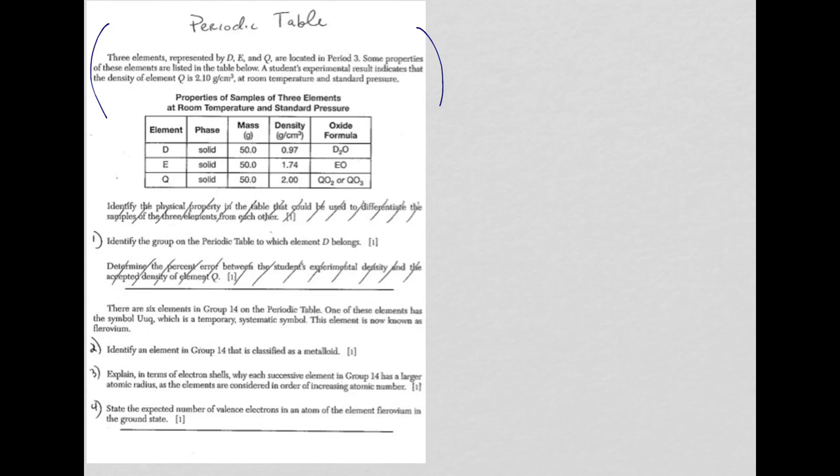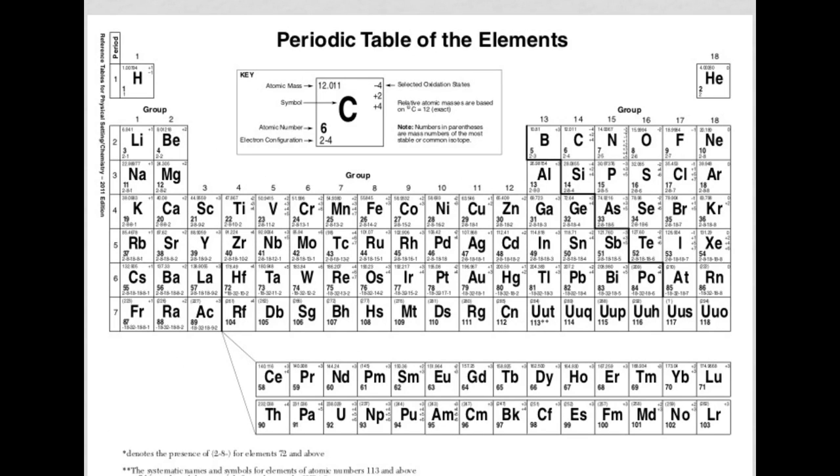For Question 1, we're looking to identify the group on the Periodic Table to which element D belongs. In order to figure that out, I have to go up and take a look at my table. The easiest way to identify the group is taking a look when element D is bonding with oxygen, how many atoms of element D I need.